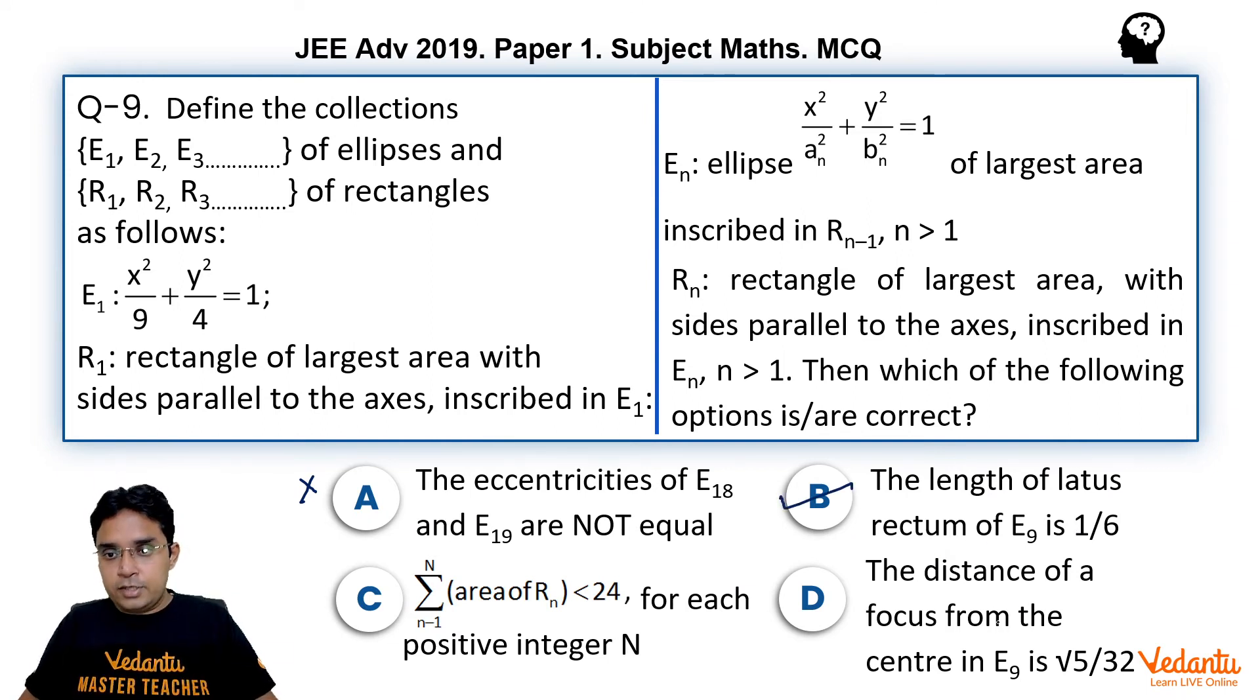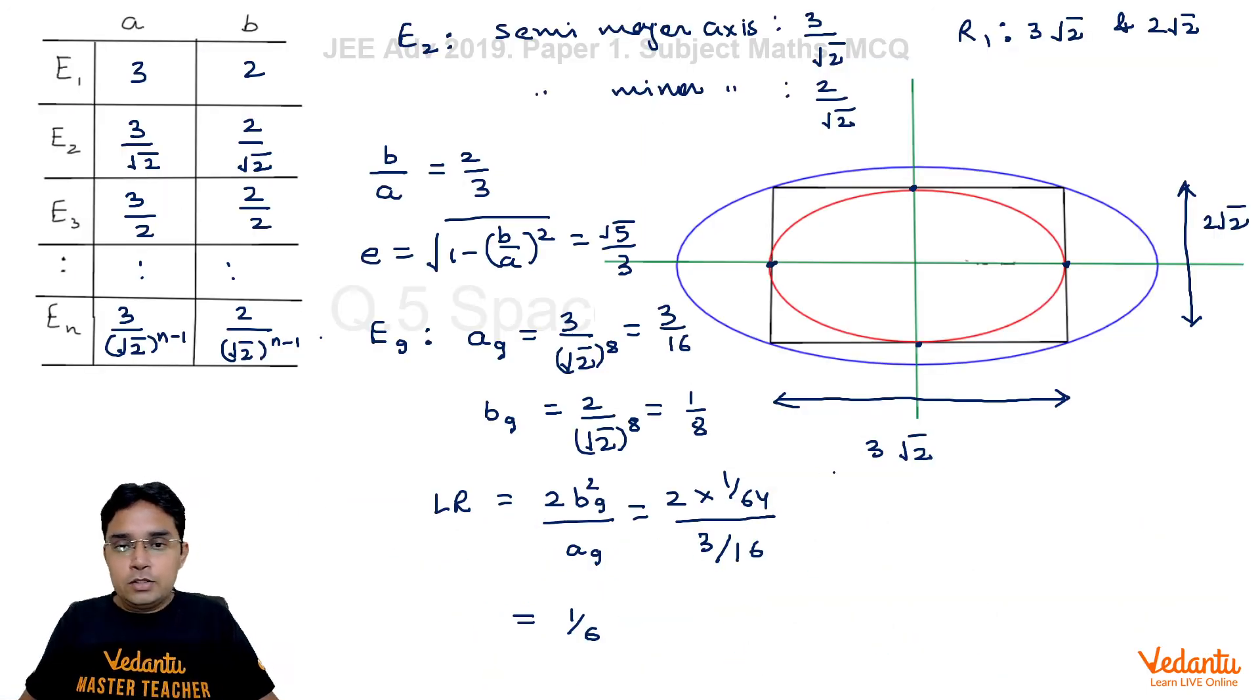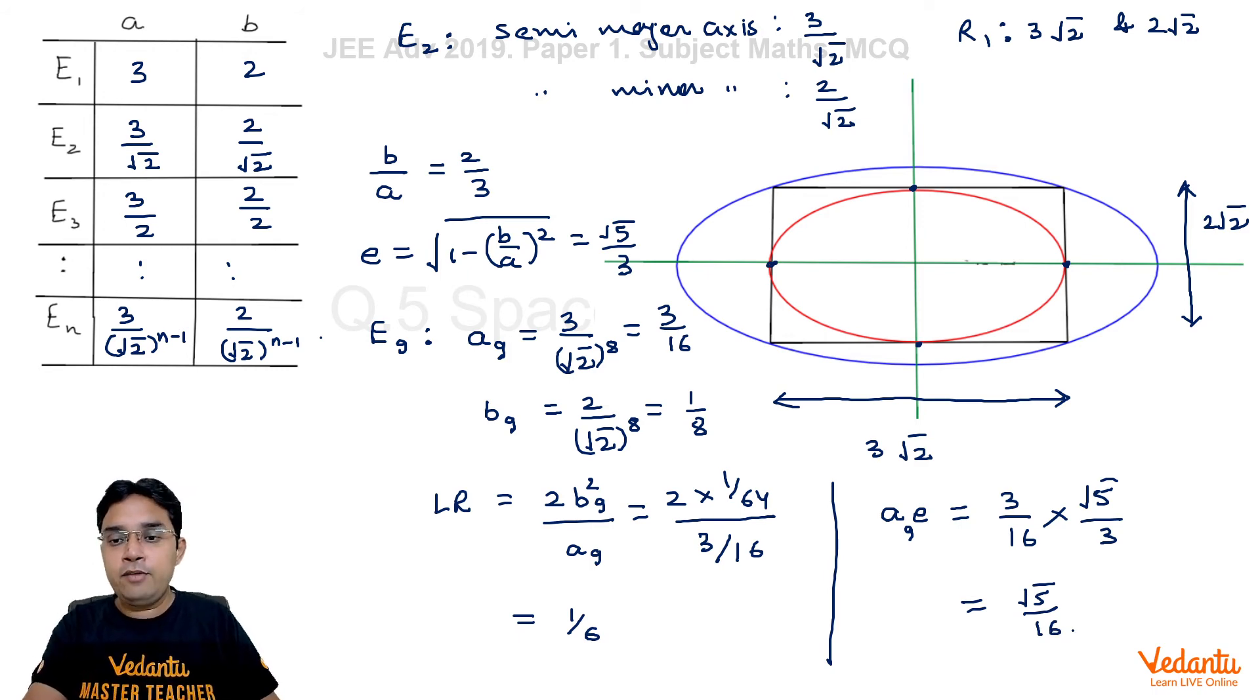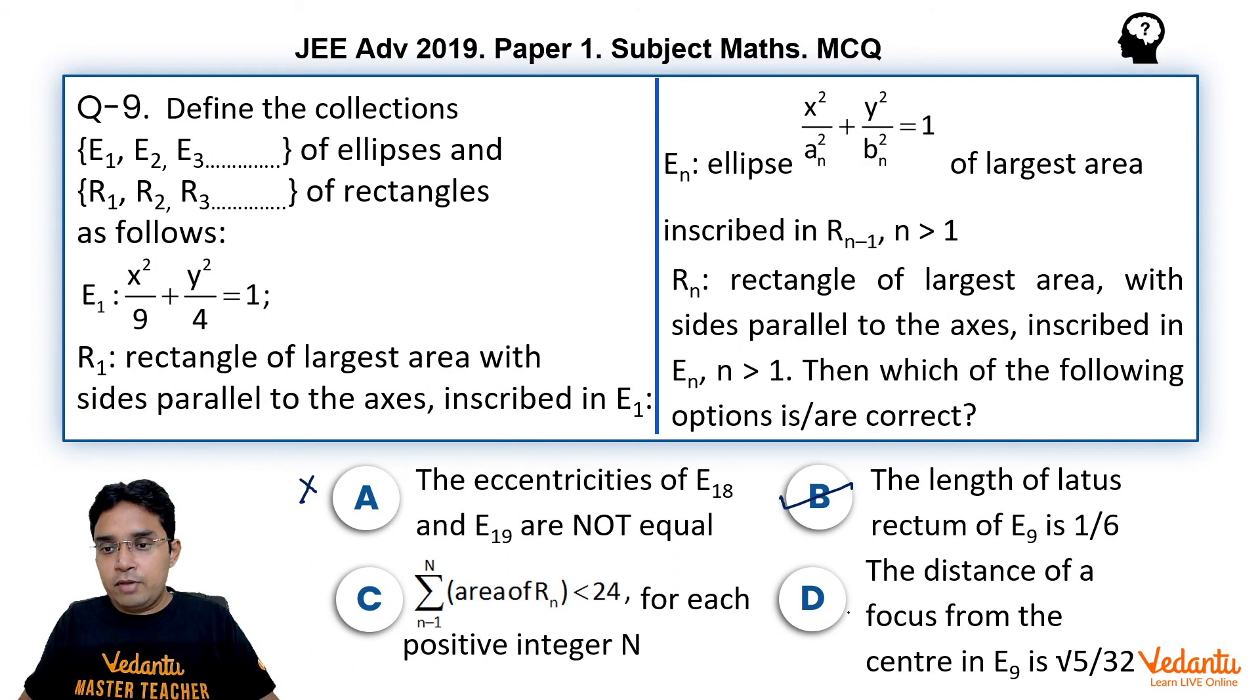Now let us do the D part first because they are asking distance of focus from center in E9 only. So for E9 distance of focus from center, it is always a × e. Here in this case it will be a9 times e. a9 we have found, 3/16. e we have found, √5/3. So this 3 will get cancelled and we get √5/16. So the distance of focus from the center in E9 will be √5/16. They have given √5/32. So this D is also wrong.